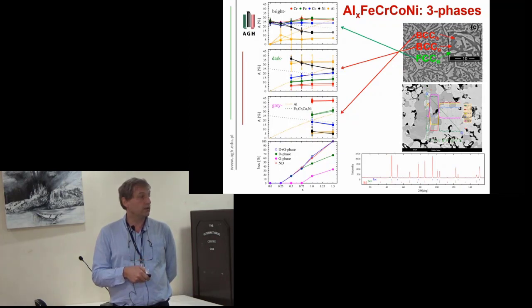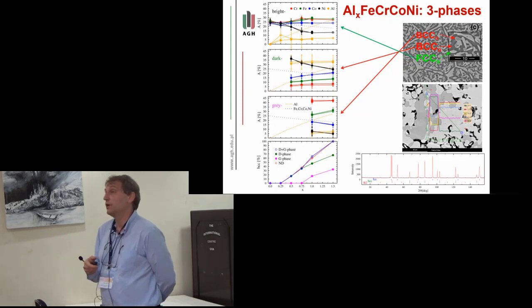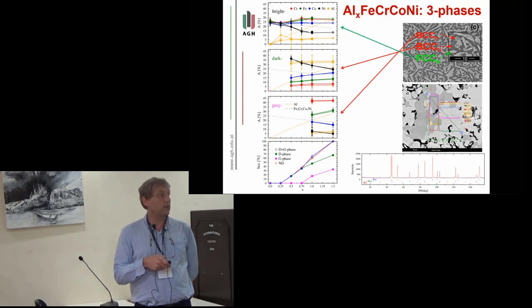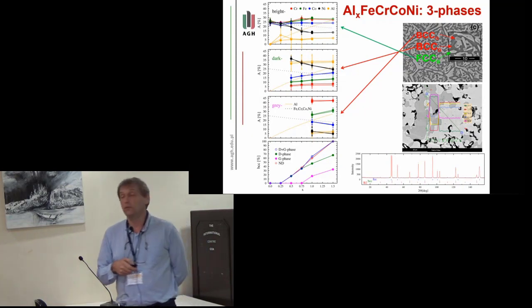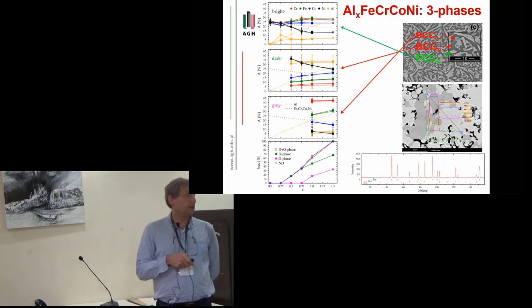Then when the nominal aluminum content reaches approximately 0.5, a second phase can be seen—it's BCC phase. So in this range we observe coexistence of these two phases. For higher aluminum contents above one, we observe a third phase, again BCC phase.